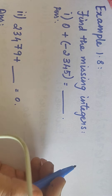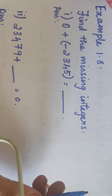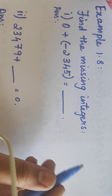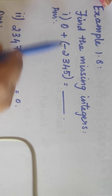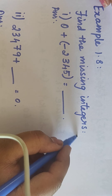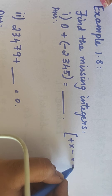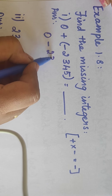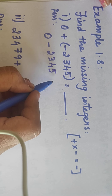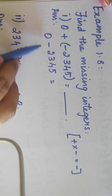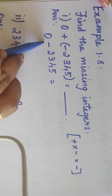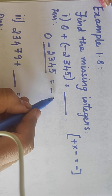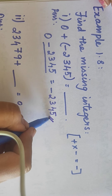Now example 1.8: find the missing integer. First one: 0 plus (-2345) equals what? As usual, plus into minus equals minus. So 0 minus 2345. When you add or subtract anything with 0, the number added or subtracted with 0 will be your answer. So minus 2345 will be the answer.